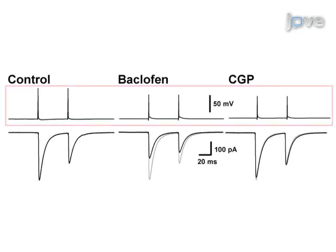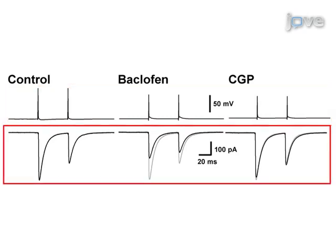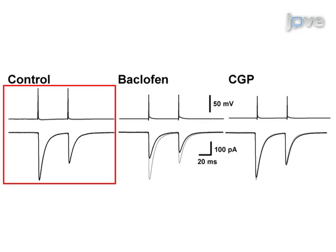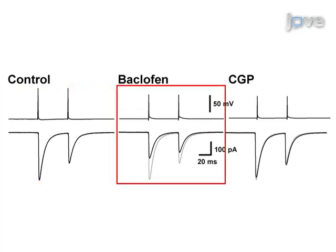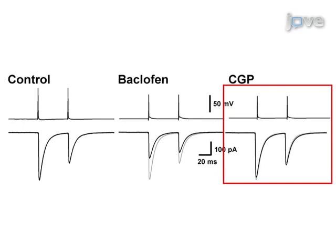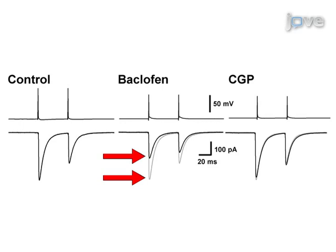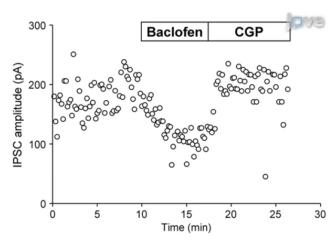These traces show action potentials in the presynaptic fast-spiking interneuron and short-latency unitary iPSCs in CA1 pyramidal cells under control conditions, after bath application of baclofen, and subsequent application of CGP. Note that baclofen reduces the iPSC amplitude by approximately 50%, whereas the GABA-B receptor antagonist resulted in an almost full recovery of the iPSC amplitude. A time-course plot of the iPSC amplitude shows the effect of baclofen and CGP.